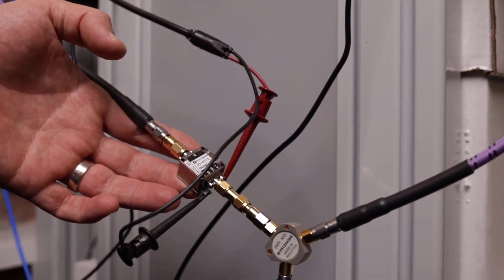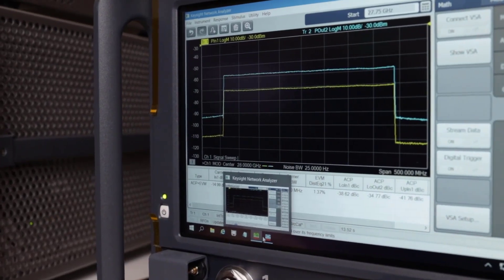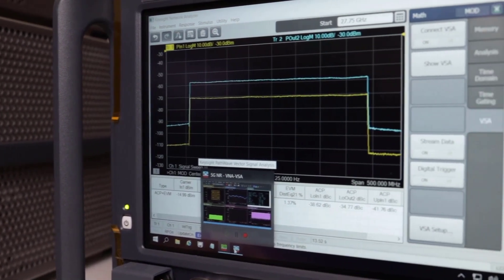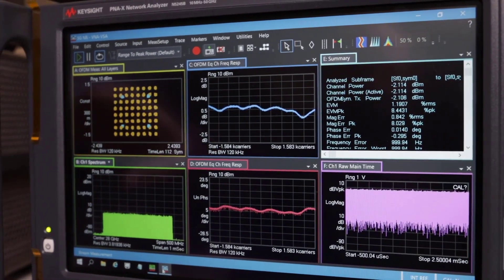And I'm using a power splitter to split the signal both into the PNAX and into the UXA. So we can see that our distortion EVM is 1.4%. So let's take a look at our demodulation EVM in VSA.